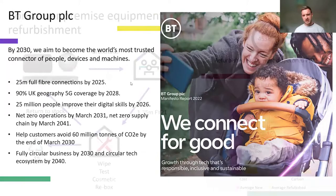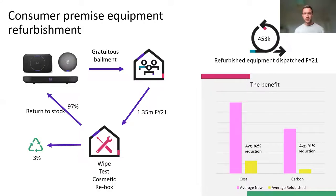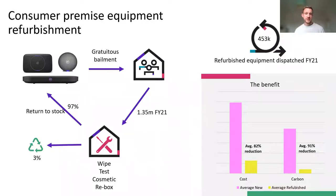When a BT customer joins, they receive a router, possibly a Wi-Fi disk, and if they have a TV package, a set-top box. In 2019 a change to the terms and conditions meant customers didn't own those devices — operating under gratuitous bailment, meaning customers have the kit for the life of the contract. Should they leave or need to change the kit, they must send it back to BT, with a charge if they don't. As a result, there's been a huge uplift in equipment coming back.